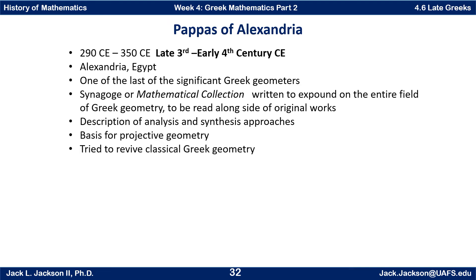In his collection, Pappus gives a description of analysis and synthesis approaches to mathematics. Synthesis starts with axioms and earlier results and builds toward the proof. The analysis approach starts with the thing you think is true — your conjecture — and working backwards in the hope of getting back to something known, then reversing the steps to write the proof forward. He is probably most known today for geometry that became the basis for modern projective geometry, and he tried — somewhat unsuccessfully — to revive classical Greek geometry as an active area of research.